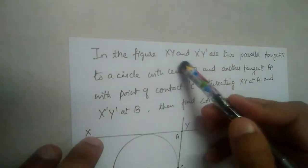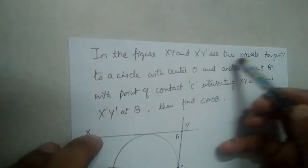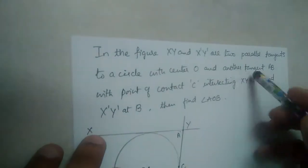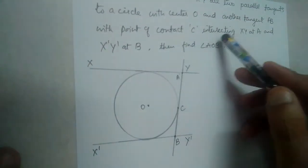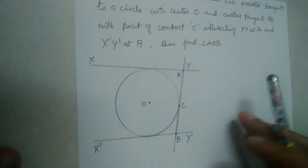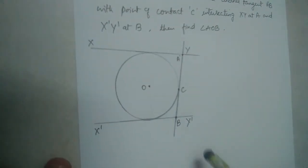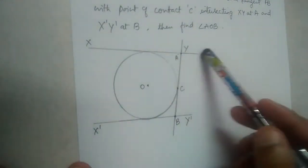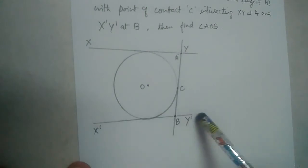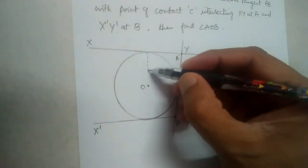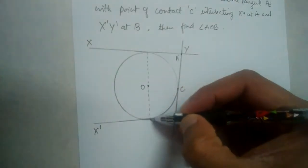In the figure, XY and X'Y' are two parallel tangents to a circle with center O, and another tangent AB with point of contact C is intersecting XY at A and X'Y' at B. We need to find angle AOB. Since XY is parallel to X'Y', these are two parallel tangents, which means PQ should be the diameter, because tangents drawn at the endpoints of a diameter are parallel to each other.